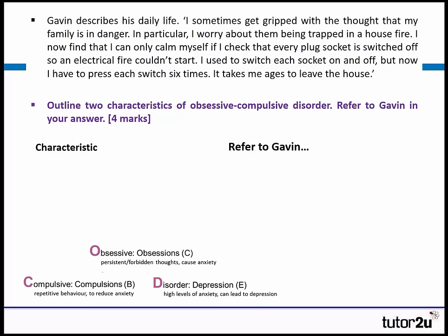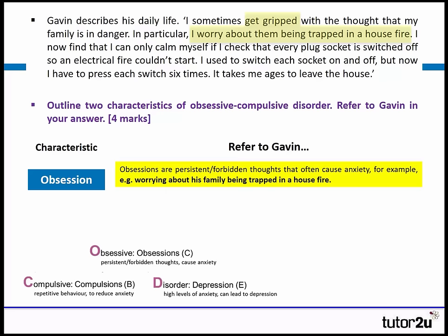If we think about the characteristics and how we might refer to them — we've got to talk about the obsession first. Clearly in the extract he worries about his family being trapped in a house fire. So we might answer by saying obsessions are persistent or forbidden thoughts that often cause anxiety — for example, worrying about your family being trapped in a house fire.